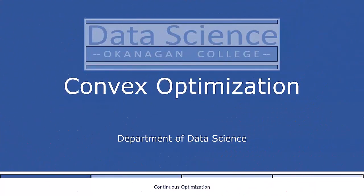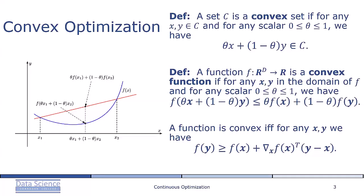A particularly useful class of optimization problems where we can guarantee global optimality. When f is a convex function, and when the constraints involving g and h are convex sets, this is called a convex optimization problem.